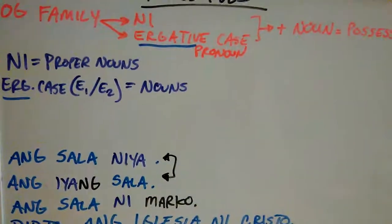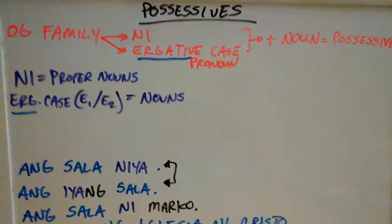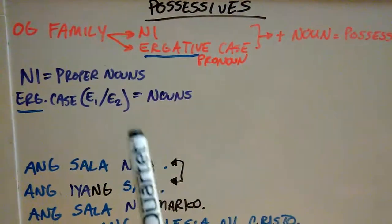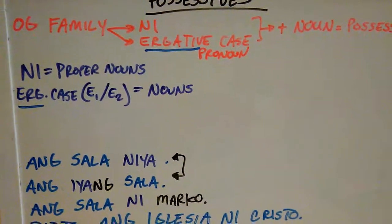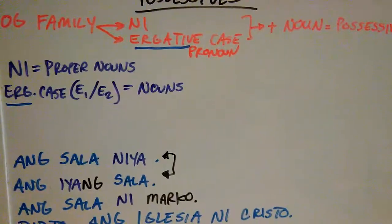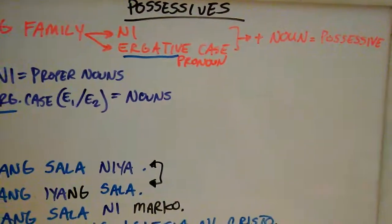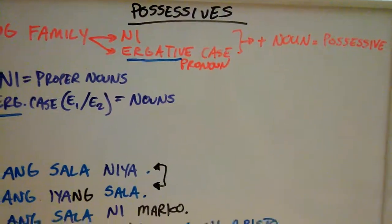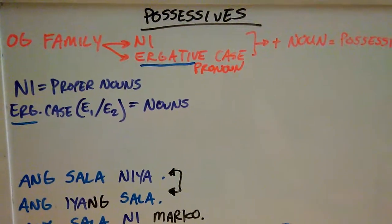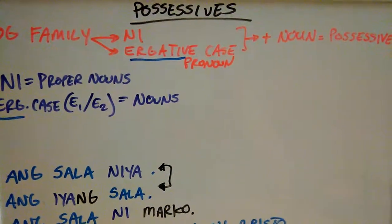I hope this clears up how to form the possessive. You have to use the ergative form — the OG family markers. You can't use the ANG family markers because if you use the ANG family markers with nouns, it's going to mark them as the focus. You have to use the OG family to mark them as a possessive.